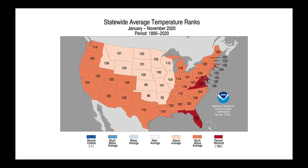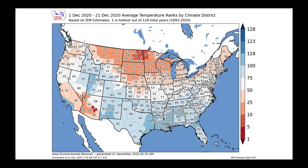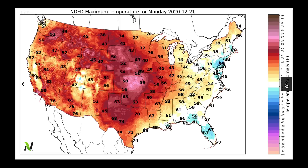We need to talk about what's going on with temperatures. Looking at January through November this year, Florida, Virginia, Maryland, Delaware, and Rhode Island all had their warmest year on record, with much of the rest of the country also having a warm year. The beginning of December, at least through the first three weeks, has favored very warm conditions across the northern tier, with cooler than average weather across the south.